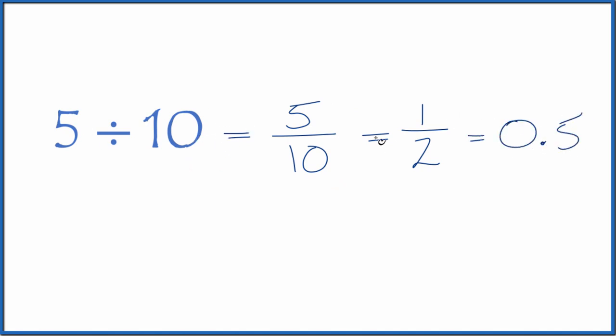So 5 divided by 10 equals the fraction 5 tenths, or simplified to 1 half, and the decimal 0.5.